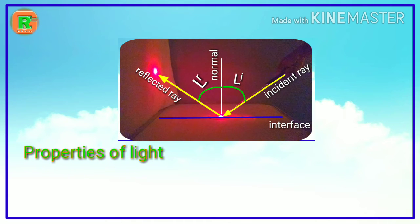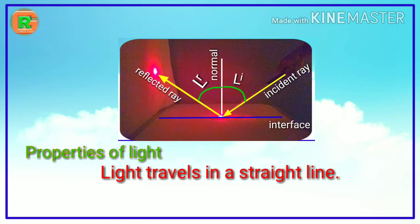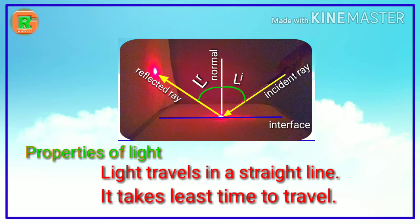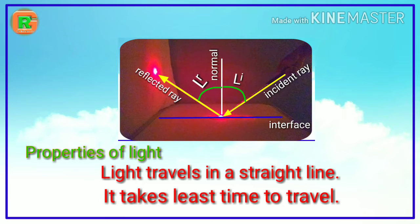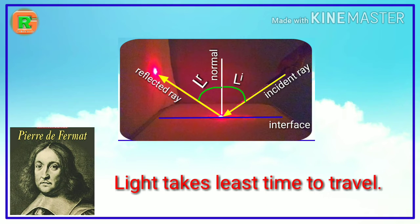We know that the fundamental property of light is it travels in a straight line. But why should the angle of reflection be equal to the angle of incidence? Because when light gets reflected from a surface, it selects the path that takes the least time. It is another property of light, that is, light takes the least time to travel. This property was first given by Pierre de Fermat, a French lawyer and an amateur mathematician.